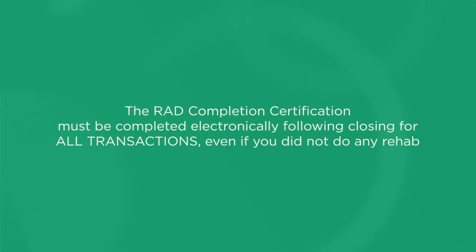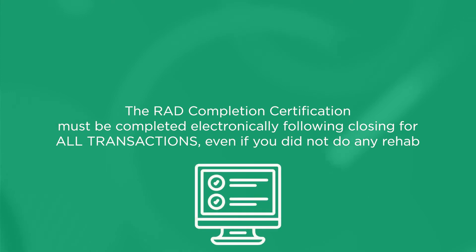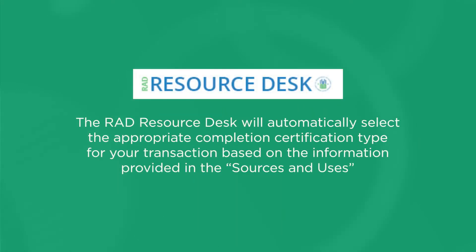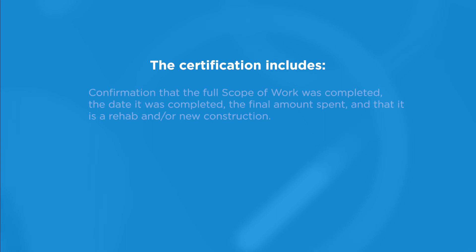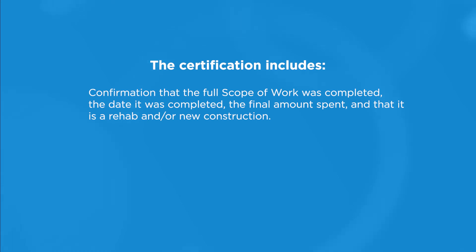Next up is the RAD Completion Certification, which must be completed electronically following closing for all transactions, even if you did not do any rehab. The RAD Resource Desk will automatically select the appropriate completion certification type for your transaction based on the information provided in the Sources and Uses. The two options are based on whether or not the PHA will do rehab post-closing. The certification includes: confirmation that the full scope of work was completed, the date it was completed, the final amount spent, and that it is a rehab and/or new construction.